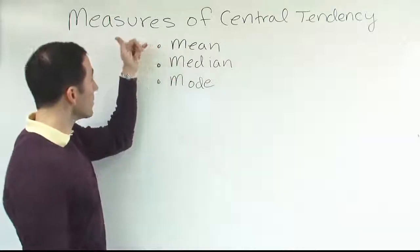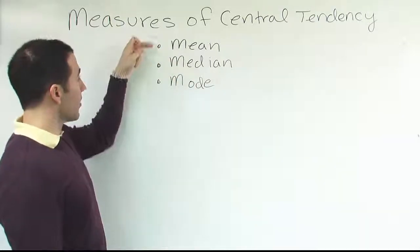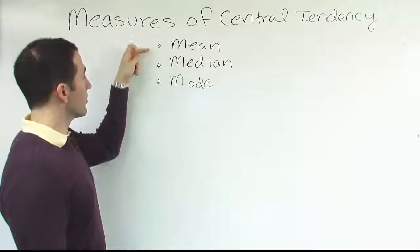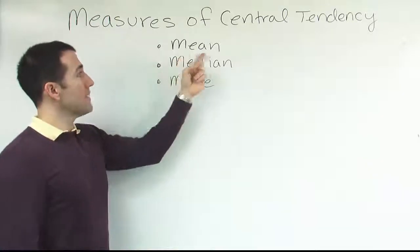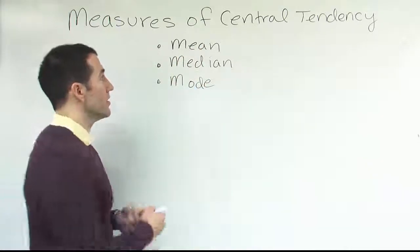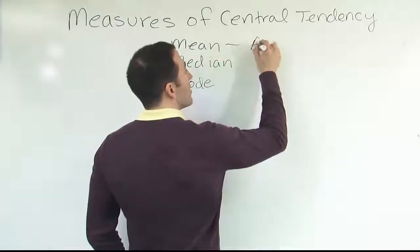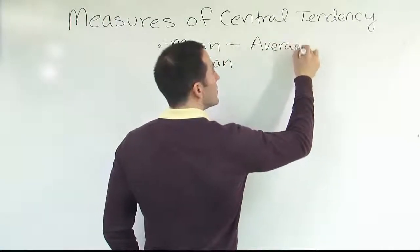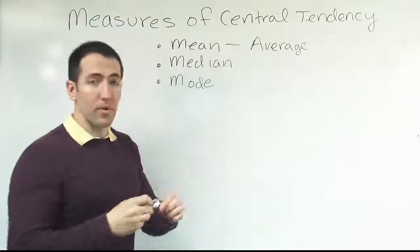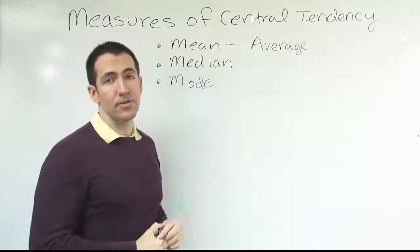Okay. So we want to measure the center clearly, and how can we do that? Well, I've listed three different numerical measures of the center on the board here. The mean is the most popular one, and you know this commonly as the average. And you know we calculate that by adding up all the numbers and then dividing by the number of values you started with.